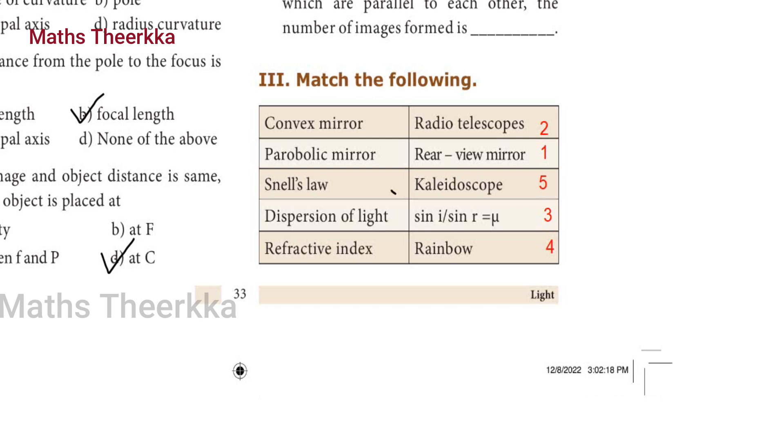Second: parabolic mirror - radio telescopes. Third: Snell's Law - sin i by sin r equals mu. Fourth: dispersion of light - rainbow. Fifth: refractive index - kaleidoscope. All right.